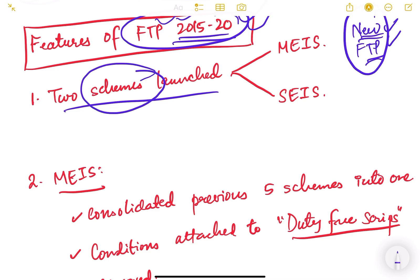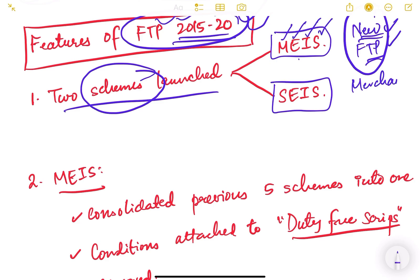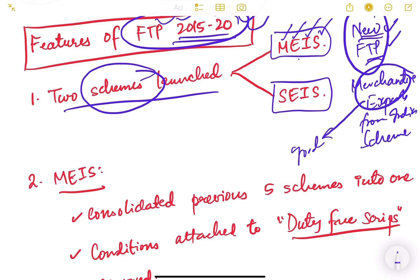In the FTP 2015, the main point was the launch of two schemes: MEIS and SEIS. MEIS stands for Merchandise Exports from India Scheme — covering physical goods exports — and SEIS stands for Service Exports from India Scheme.